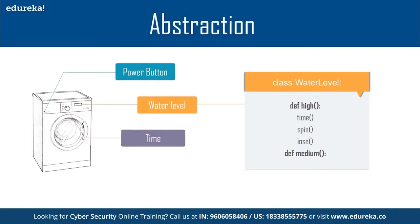Abstraction is basically simplifying complexity. Take a washing machine: there is a housing, motor, drum, circuitry, water inlet and outlet — but from a user perspective we see just a power button, water level indicator, and timer. You switch it on, water fills in, you wash clothes based on a timer. Water level has states: high, medium, low. There is a time function, a spinning function, and an insertion function. This is a broad definition of abstraction.